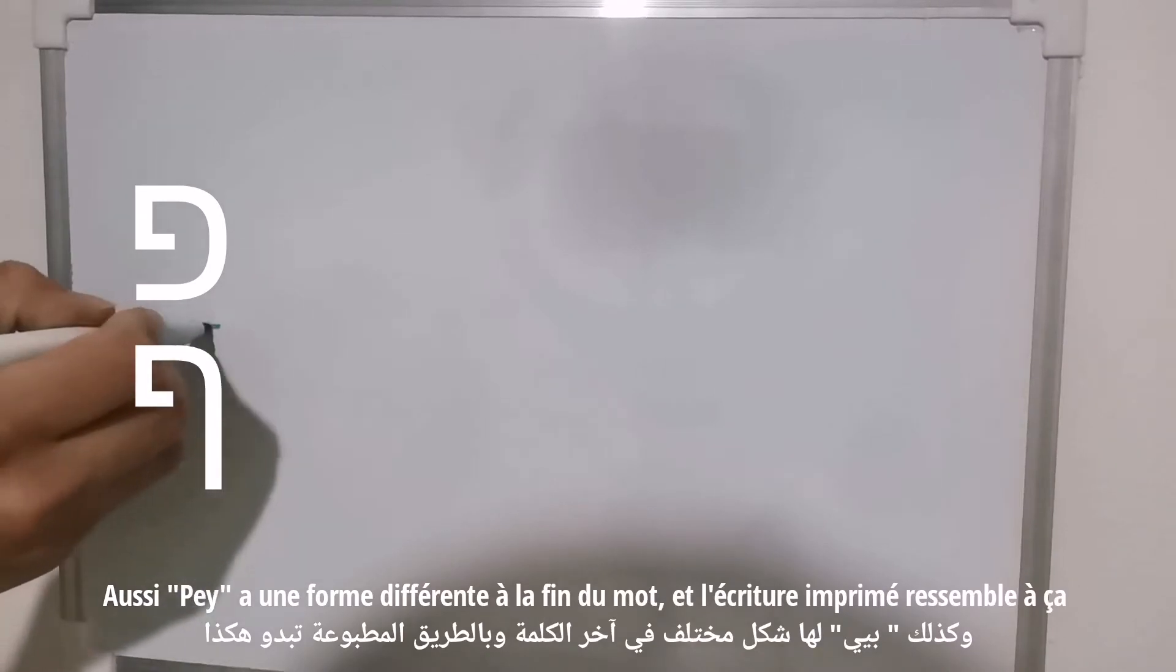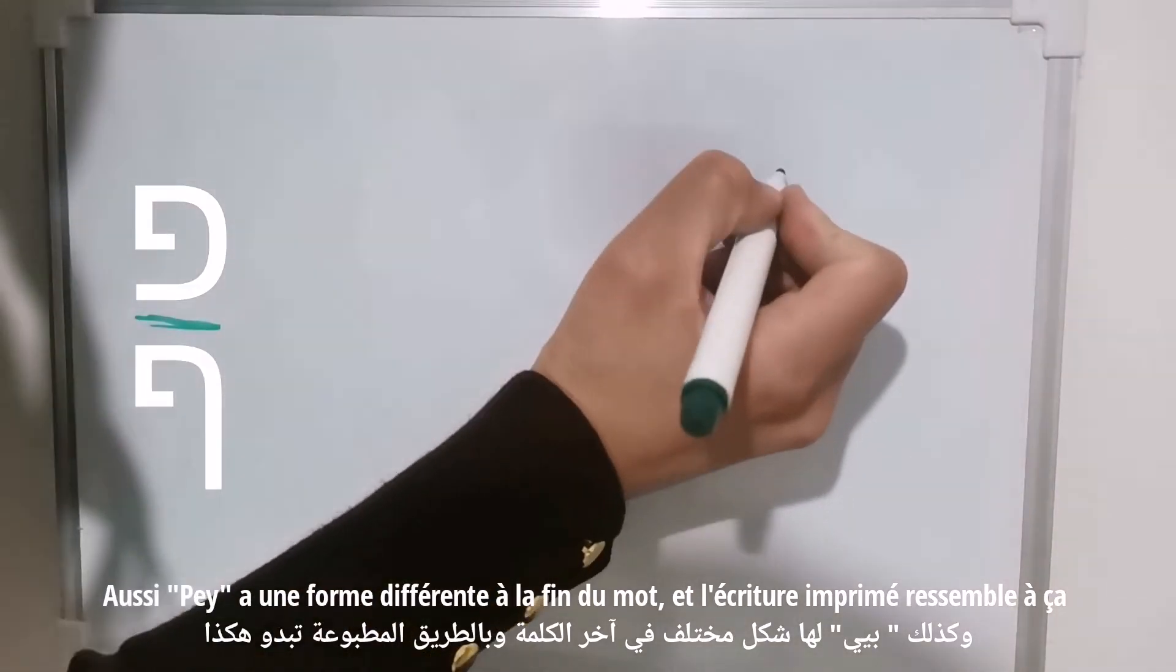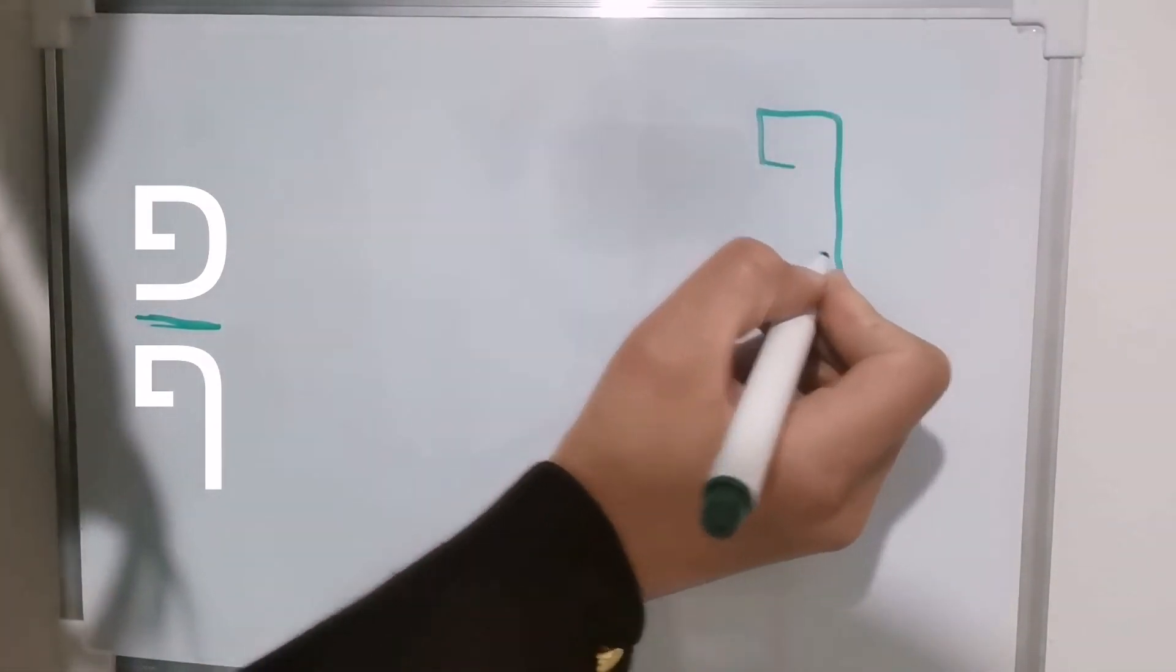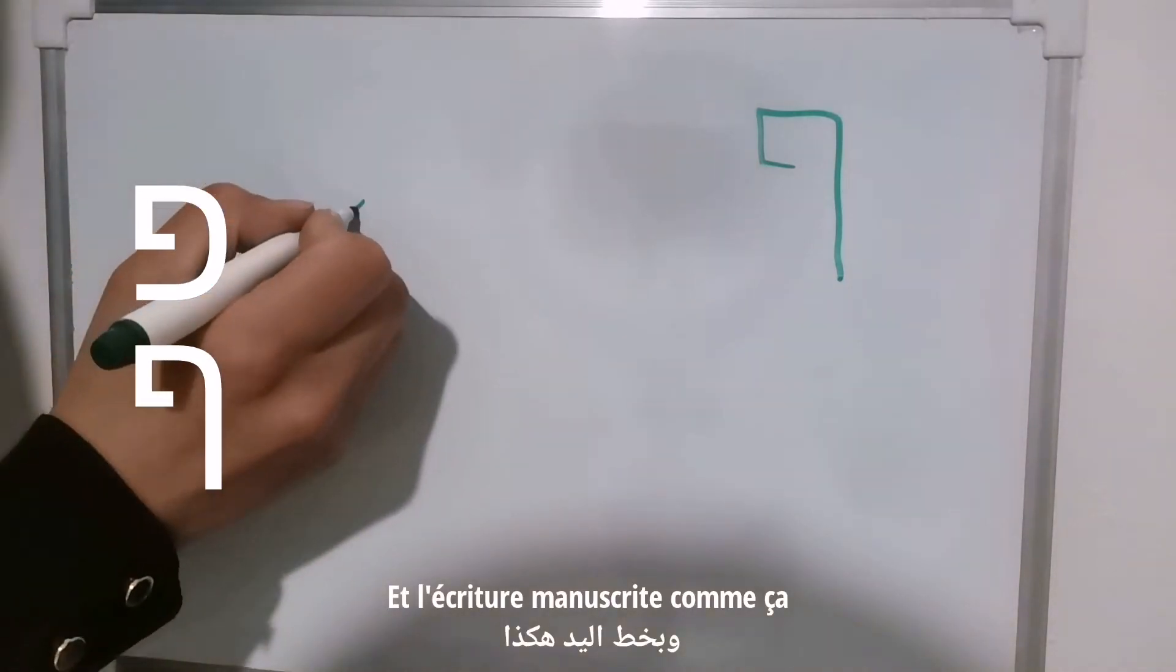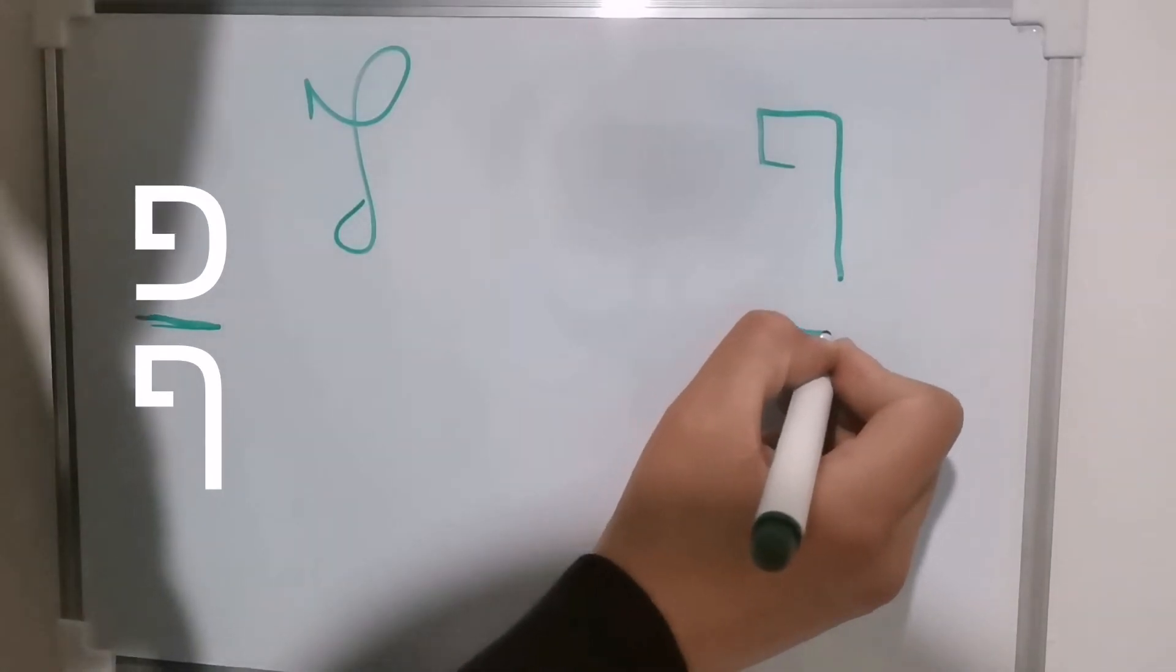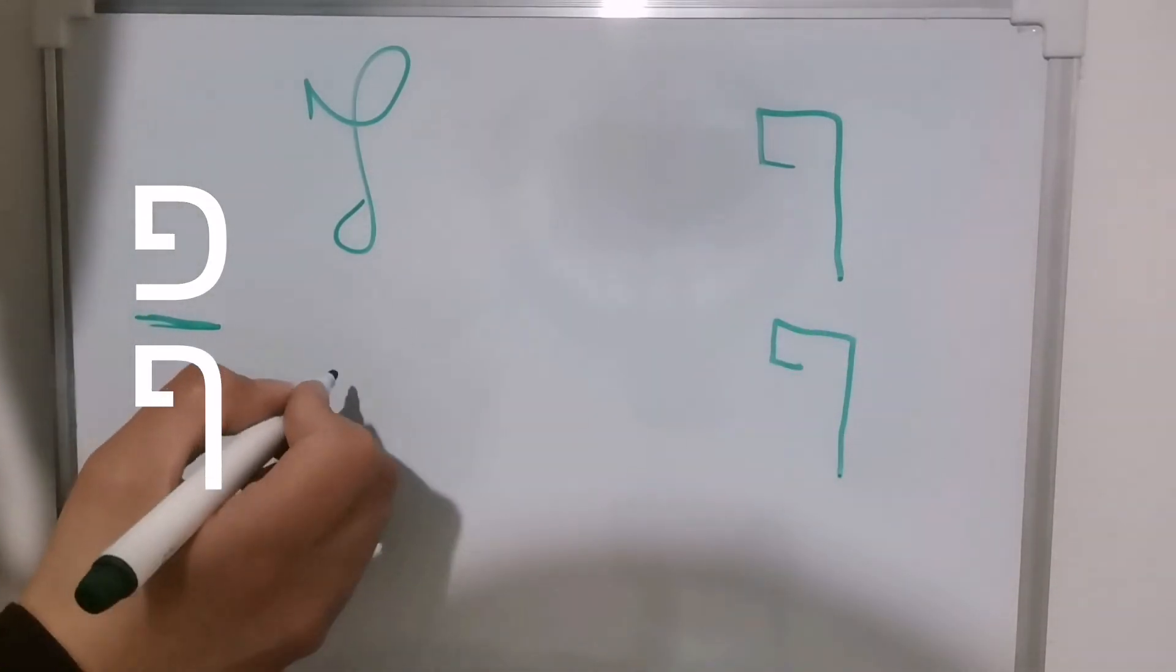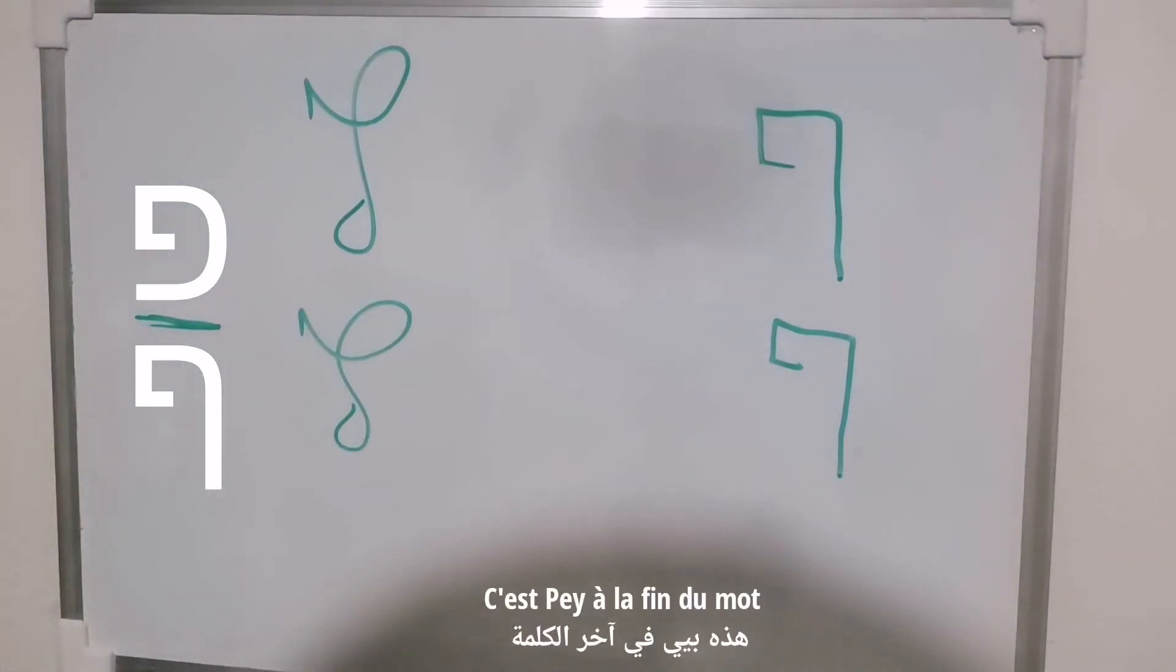Also Peh has a different form at the end of the word. The print version looks like this, and the script version becomes like this. Let's write it again. This is Peh at the end of the word. We call it Peh Sofit.